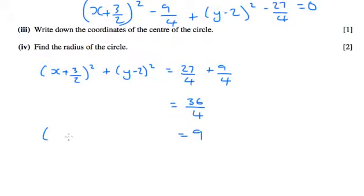So we've got our two brackets, x plus 3 over 2 squared and plus y minus 2 squared equals 9. And this number here is the value of r squared. So r squared is 9, which means the radius is 3.